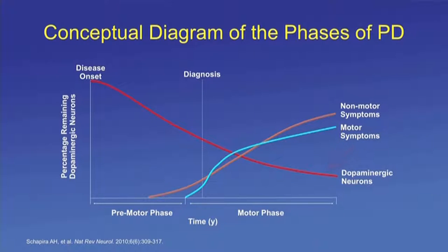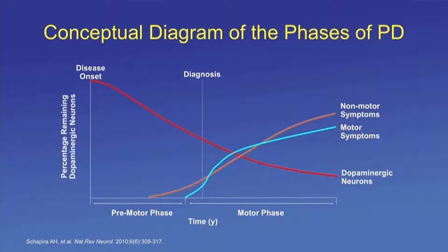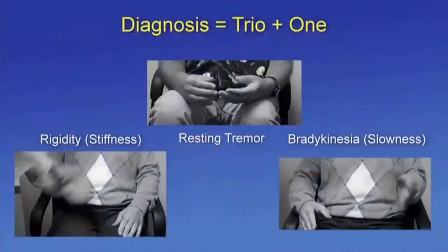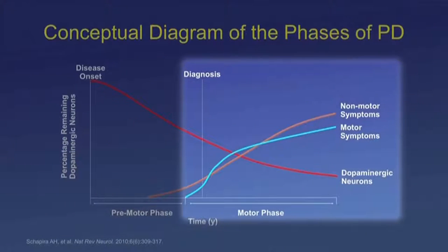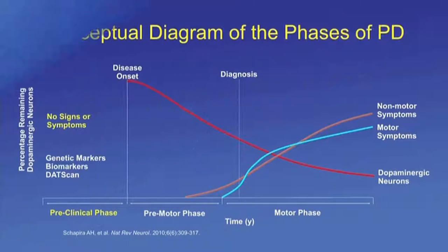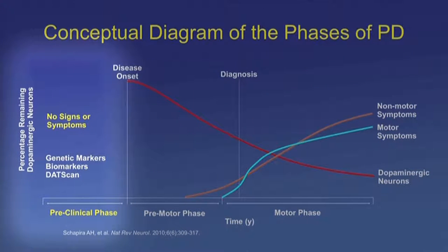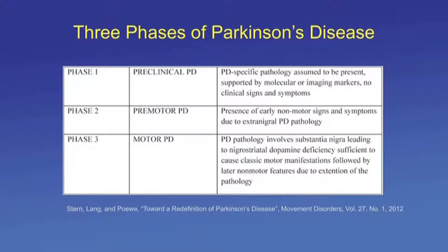In the premotor phase, non-motor symptoms start to occur and increase as dopamine cells are lost. Motor symptoms gradually increase as the disease progresses. The motor phase begins after diagnosis is made from the trio of rigidity, akinesia, and resting tremor — all with asymmetry. Both motor and non-motor symptoms increase while dopaminergic neuron loss continues. A new preclinical phase has been added to the left by Stern, Lang, and Werner, involving genetic, molecular, and biological markers.